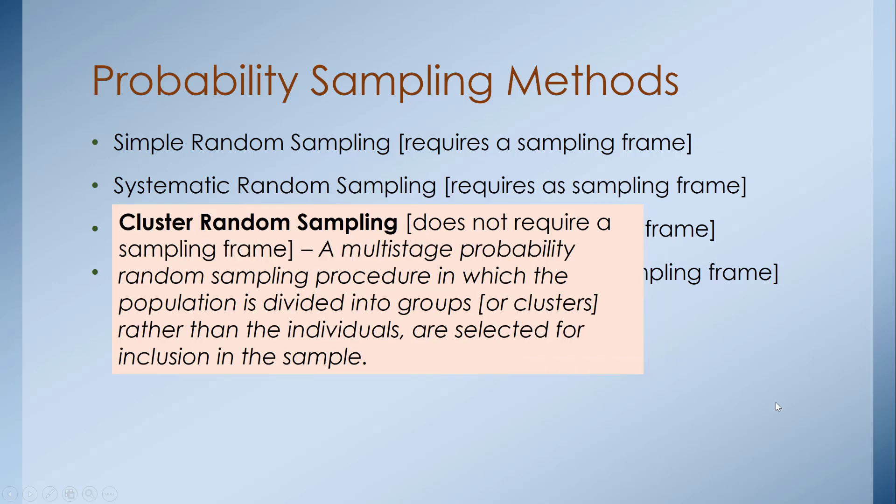Cluster random sampling follows a similar design but does not require a sampling frame. It's a multi-stage probability random sampling procedure in which the population is divided into groups or clusters rather than individuals, and those clusters are selected for inclusion in the sample. It's a staged approach using those groups.